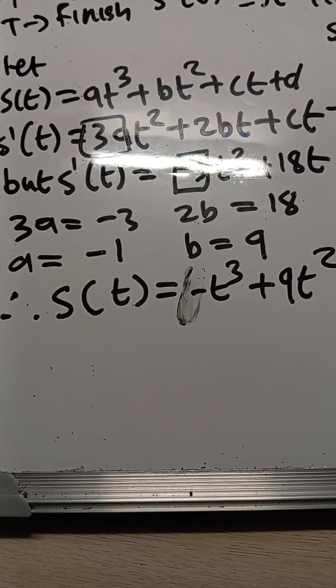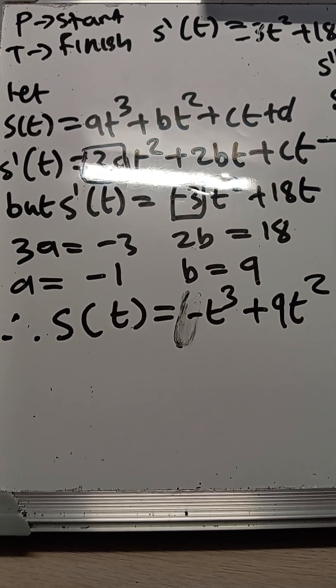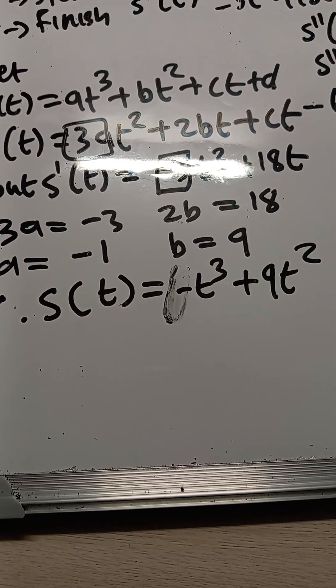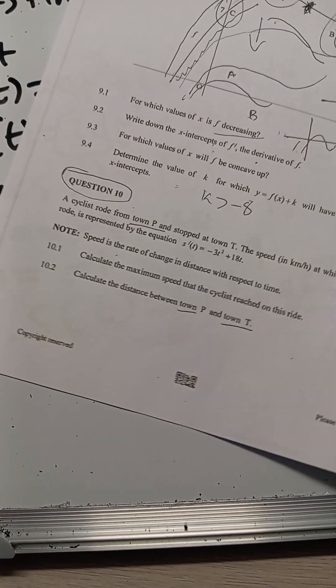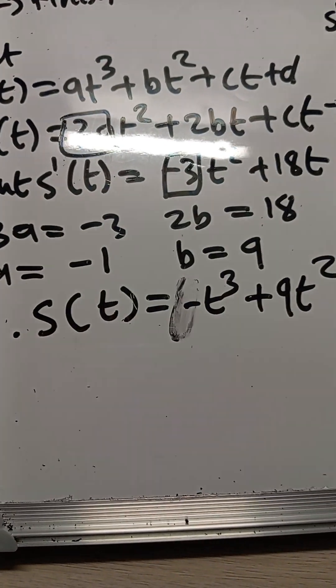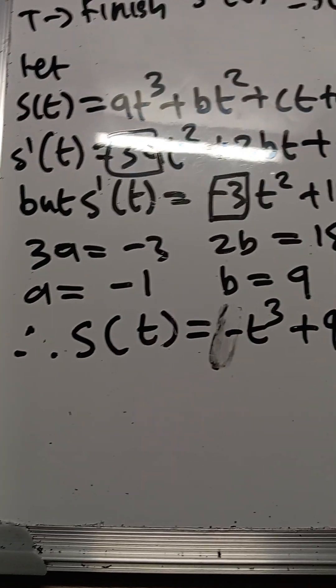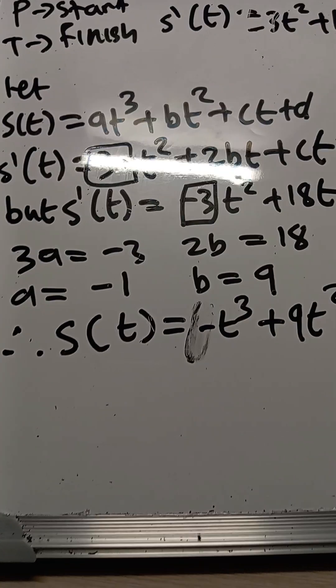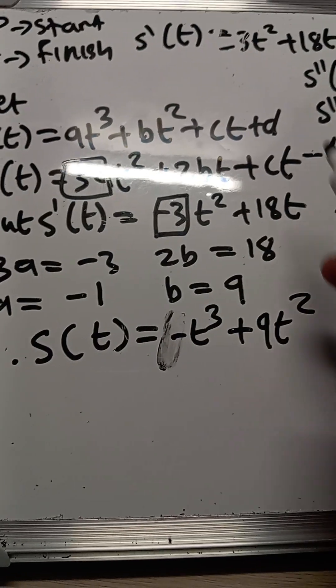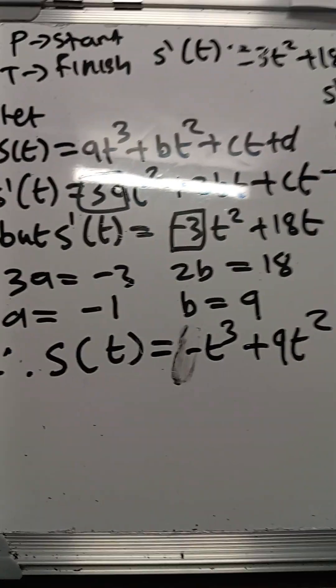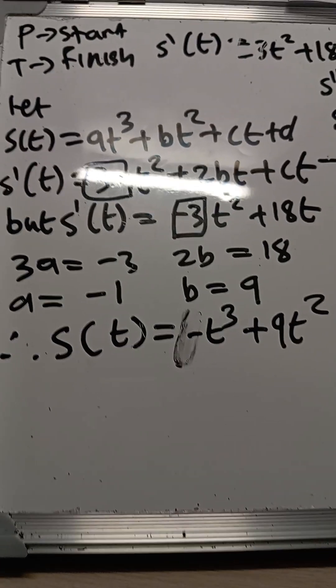We can assume c = 0 because at town P - the starting point - s(0) = 0. This is the initial location, so the constant term vanishes and s(t) = -t³ + 9t².